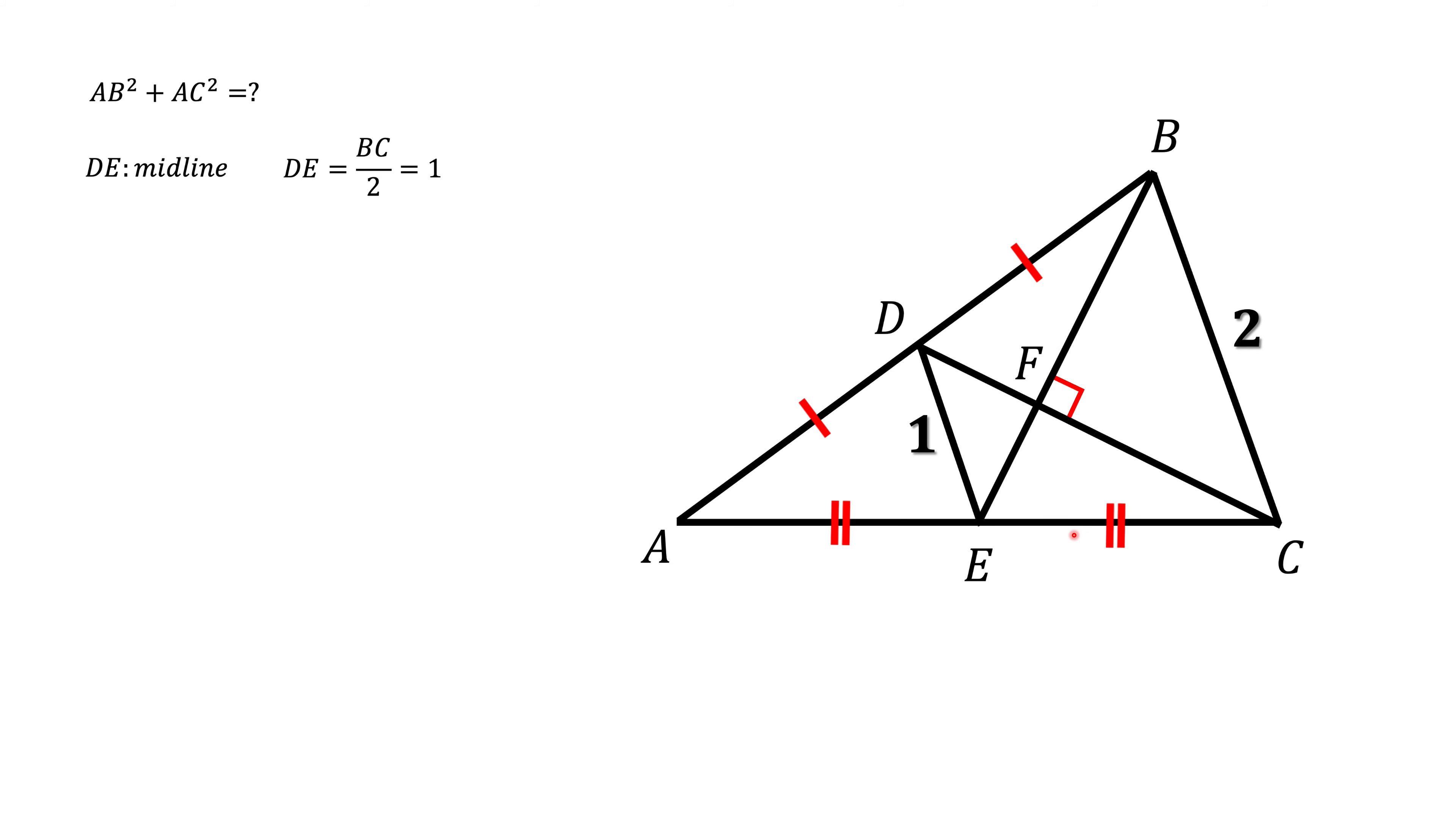The other thing we know is the property of the side bisectors, also known as medians. By median theorem, we know that when medians intersect, and here they intersect at point F, their split is the ratio 2 to 1, which means that BF will be twice as long as EF, and CF will be twice as long as DF.